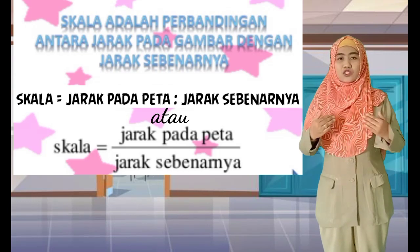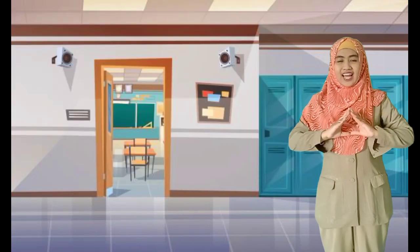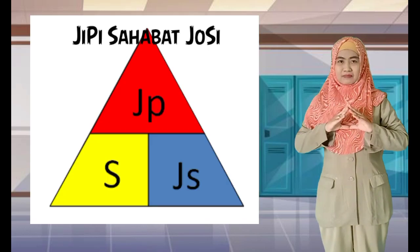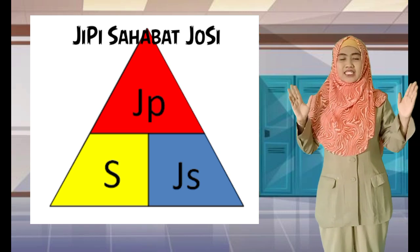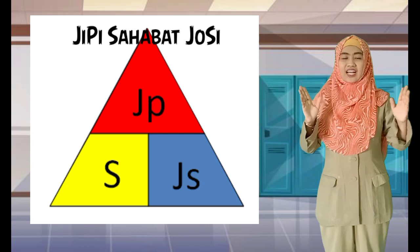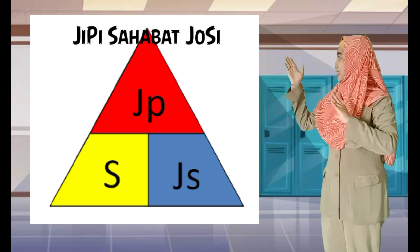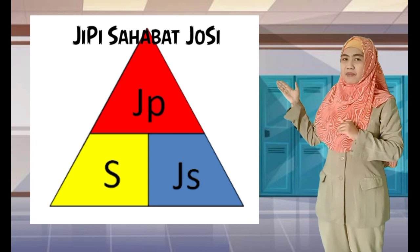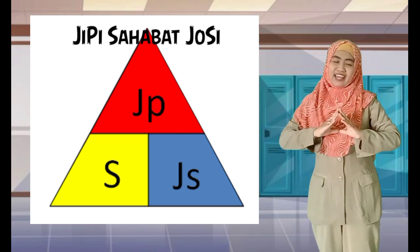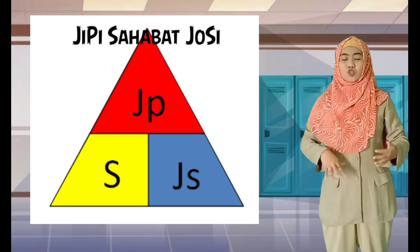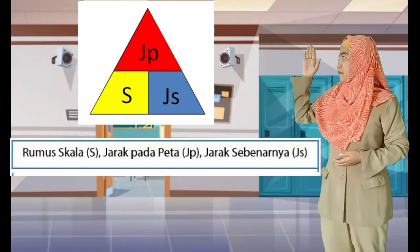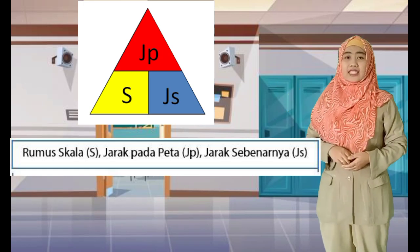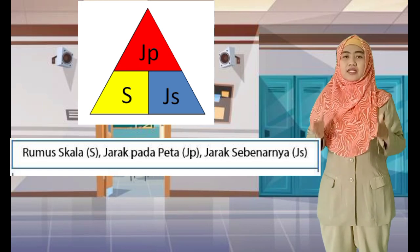Untuk memudahkan kalian, Ustaz Riris punya satu segitiga ajaib lagi. Namanya adalah Jipi sahabat Josi. Kalau dimasukkan ke dalam segitiganya, bentuknya adalah J-P di atas, S dan J-S di bawah. Di mana J-P adalah jarak pada peta, S adalah skalanya, dan J-S adalah jarak sebenarnya.